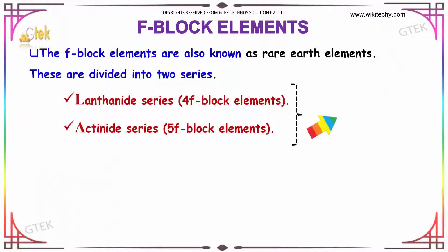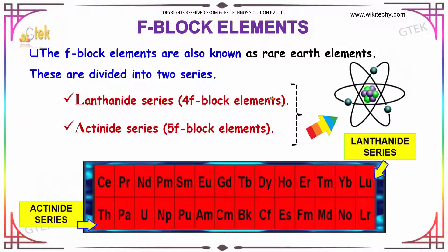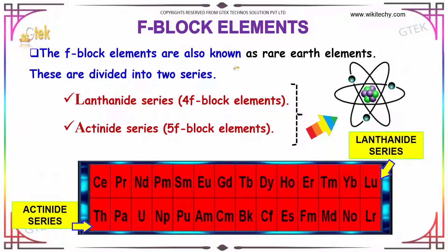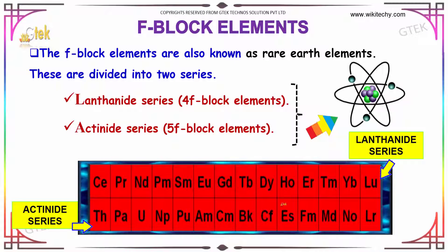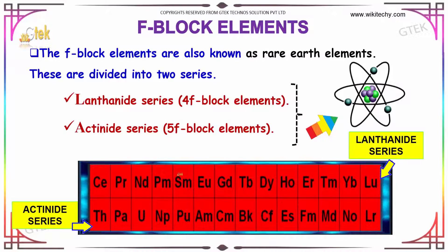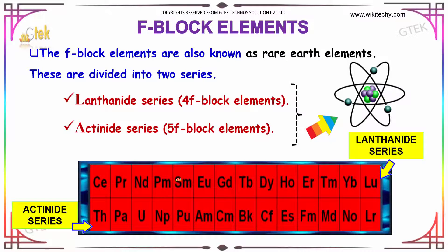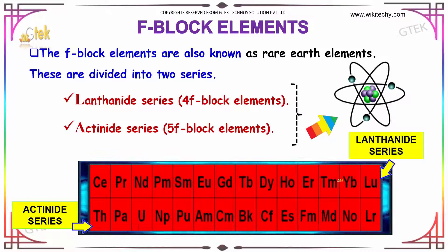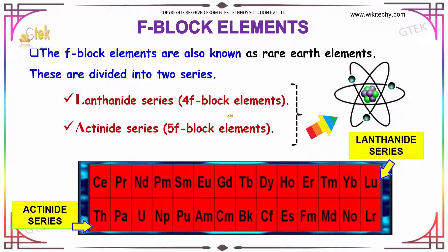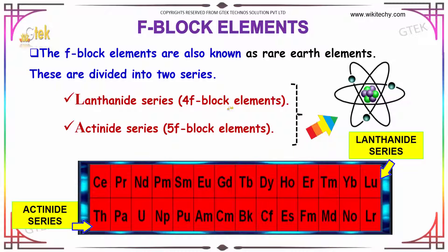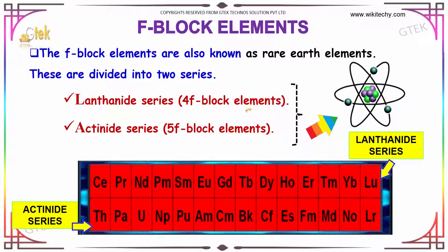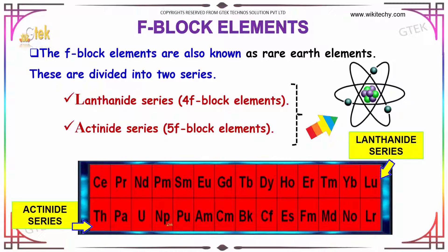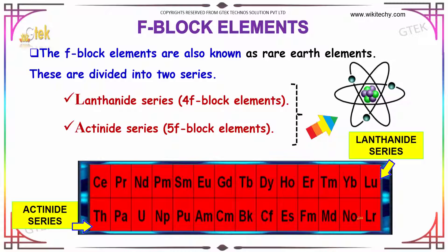The F-block elements are also known as rare earth elements and are divided into two series. One is called the lanthanide series — these are the 4f block elements — and the other is the actinide series, which are the 5f block elements.